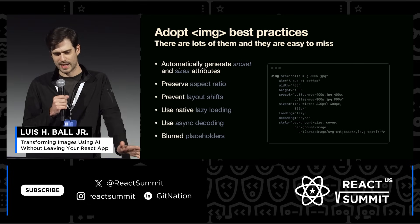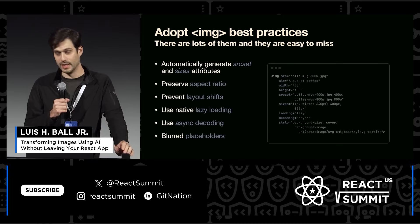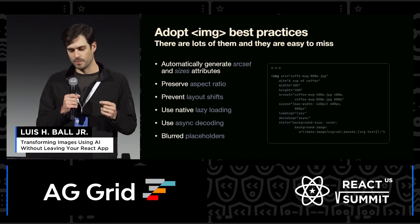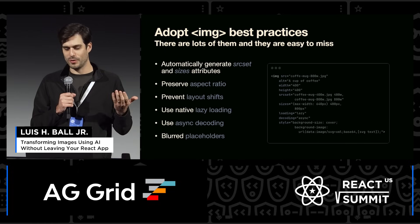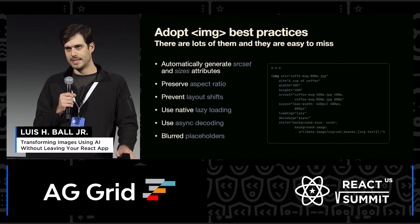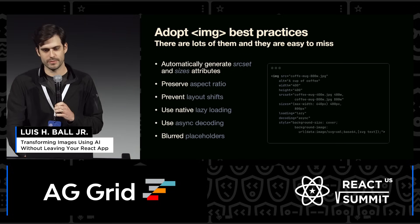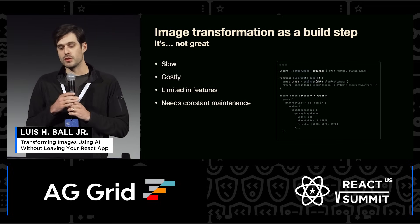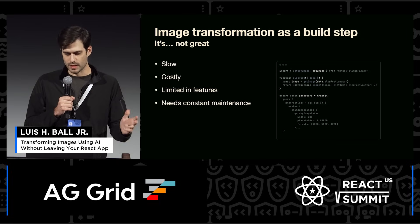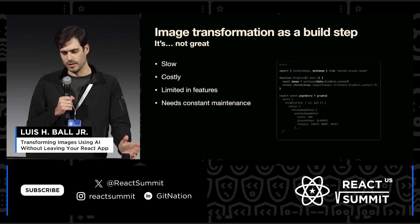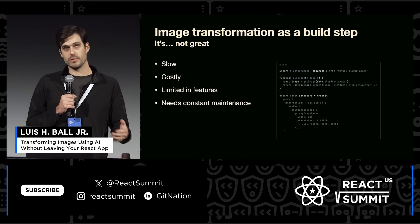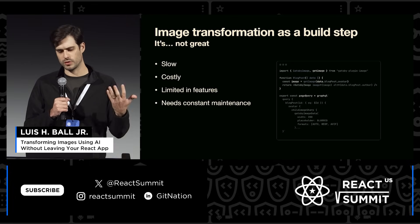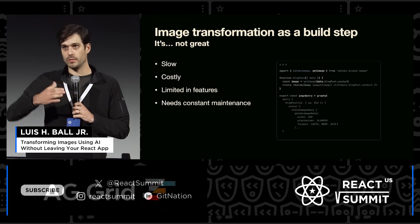There's a bunch of them — srcset and sizes, aspect ratio, layout shifts, lazy loading, etc. And ensuring you hit all of them takes time. It requires you to do things like generate variants for all of your images. One approach is image transformation as a build step, but it's not great. Transforming at build time can take forever, the feature set is more limited, and you have to do careful maintenance of your tooling to do it right long-term.